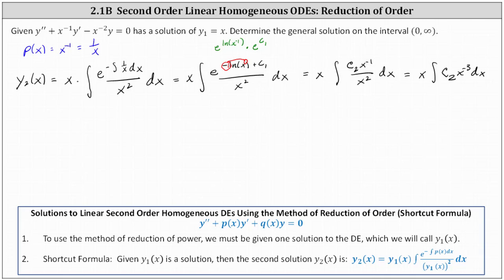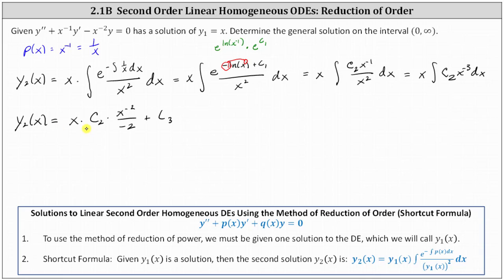Now we can finally integrate. y sub two of x is equal to x times c sub two times x to the power of negative two divided by negative two, plus a constant which we'll call c sub three. We can use any solution from this family of functions for y sub two of x.